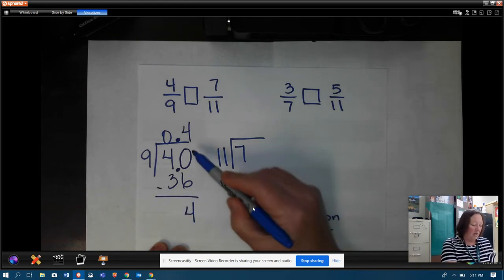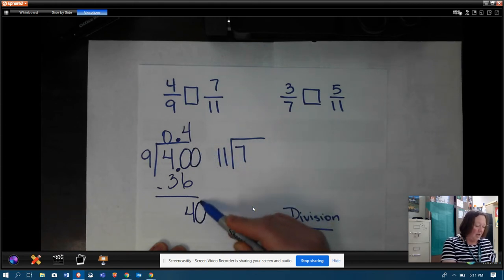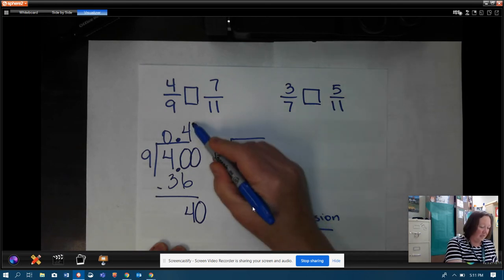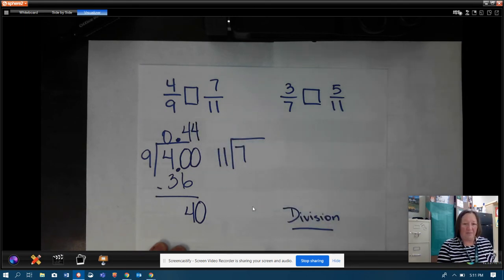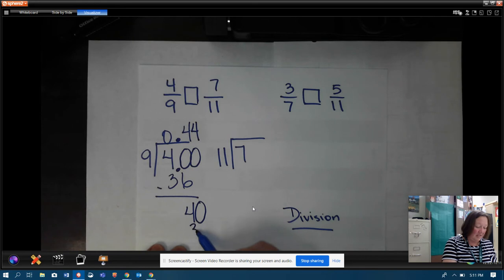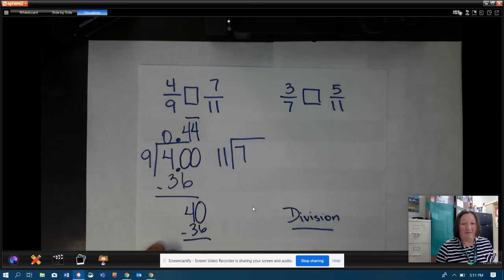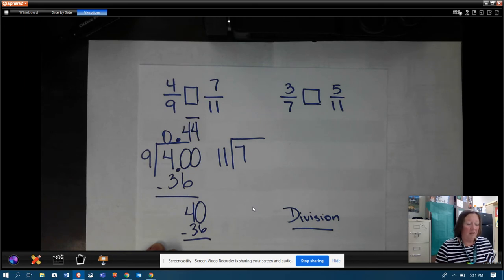And then I would have four left over when I subtract. Well, guess what I'm going to do? I'm going to put another zero and bring it down. And I'm going to say how many times does nine go into forty? Well, that's going to be four again. And remember when it repeats like this, we have a repeating decimal, and we can just put a bar over it and say that's going to go on forever.